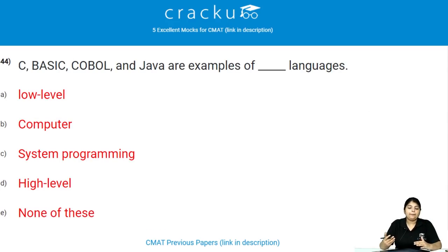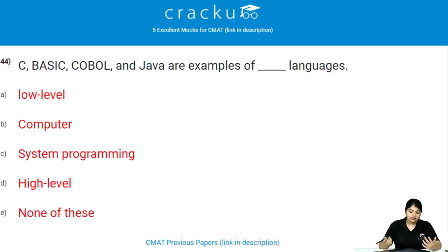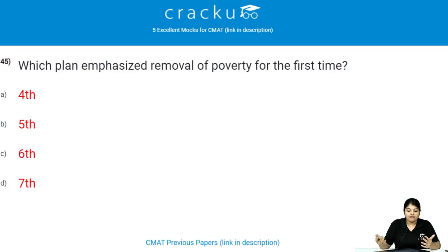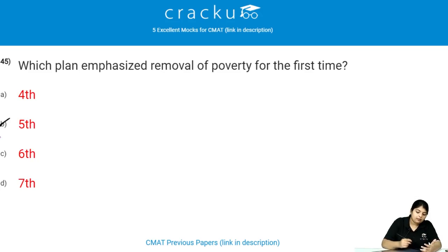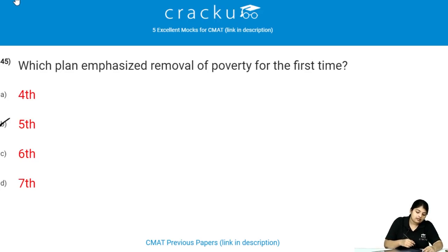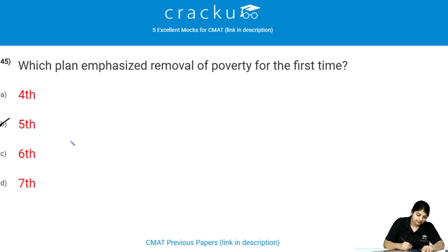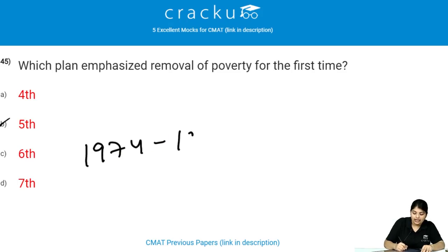C, BASIC, COBOL and Java are examples of which type of languages? These are examples of high-level languages. Which plan emphasized removal of poverty for the first time? The Fifth Five-Year Plan emphasized removal of poverty for the first time, with its tenure from 1974 to 1979.